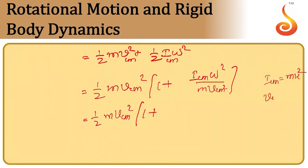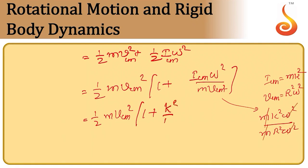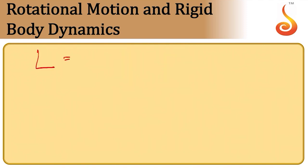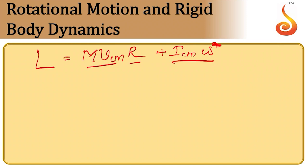This can be simplified to (1/2)mv_cm²·(1 + k²/r²), where k is the radius of gyration, since I_cm = mk² and v_cm = rω. The rolling body also has total angular momentum given by the translational part m·v_cm·r plus the rotational part I_cm·ω.